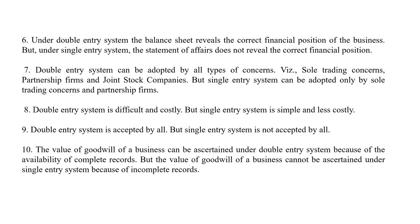The seventh difference: the double entry system can be adopted by all types of concerns — for example, sole trading concerns, partnership firms, and joint stock companies. But the single entry system can be adopted only by sole trading concerns and a few small partnership firms.